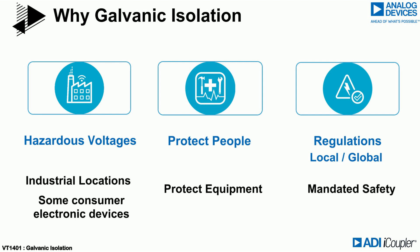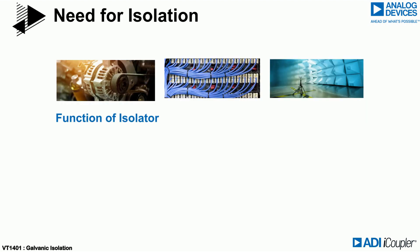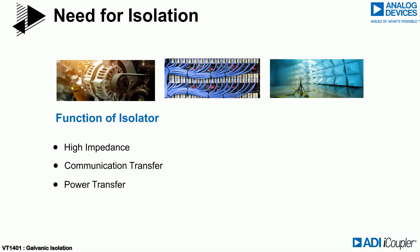There are many regulations both at local and global levels that mandate safety considerations. The most common reason to design an isolator into a system is to satisfy regulatory requirements. The basic function of an isolator is to maintain a high electrical impedance between two different voltage domains. Some can transfer communications or power, and some allow for the transfer of both integrated into one device.